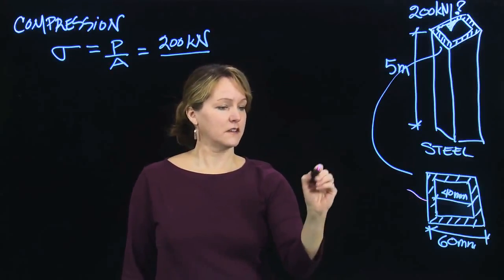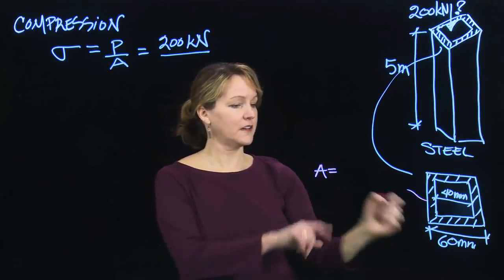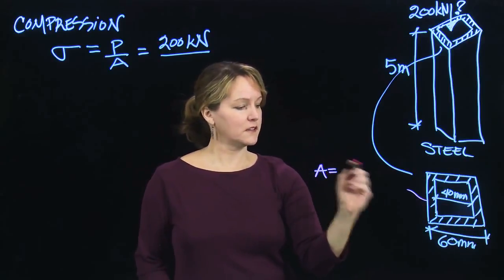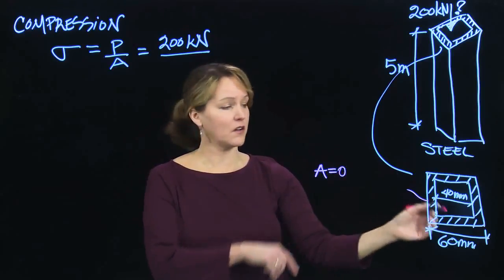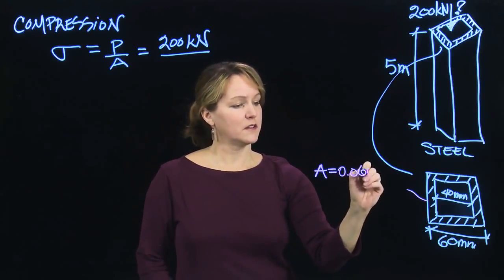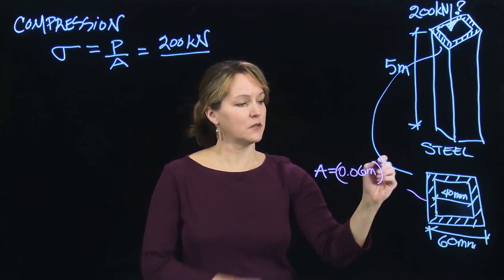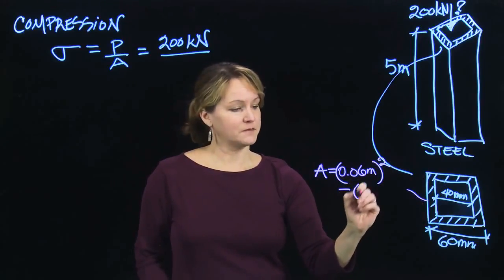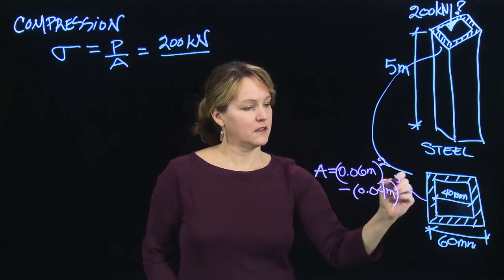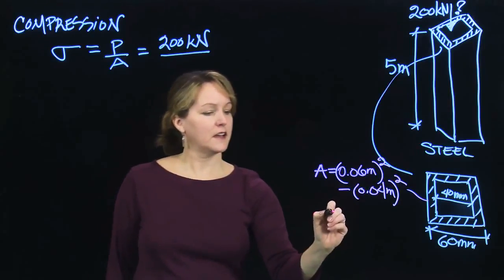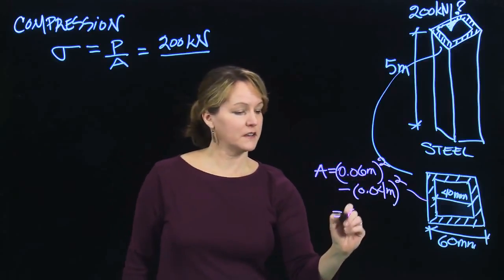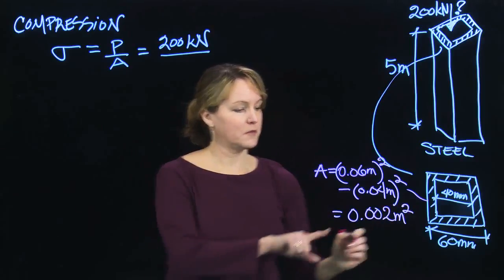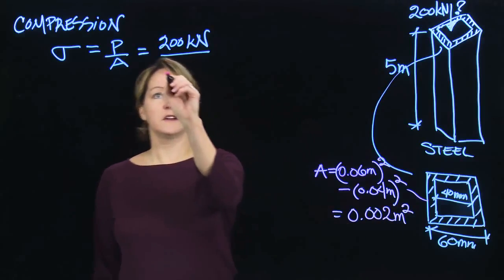So let's go back and calculate the cross-sectional area. For this cross-section, I can figure out the cross-sectional area. It's a square, so I'm going to take the outer, so it would be 60 millimeters. I'm going to switch that to meters, so I'm working all in meters. 0.06 meters, and that'll get squared. That's the area of the outer section, and I'll subtract the area of the inner section. 0.04 squared, and then I can calculate that cross-sectional area, which is 0.002 meters squared. That's my cross-sectional area that I can then use up here in this equation.